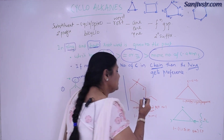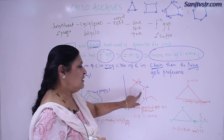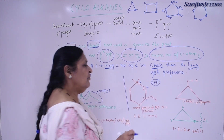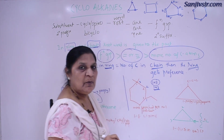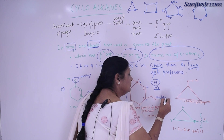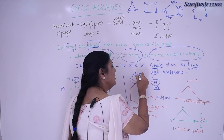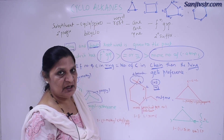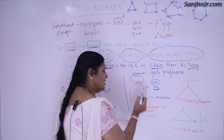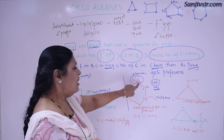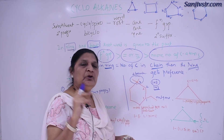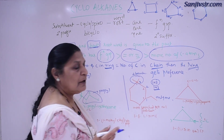If numbering starts from one side: 1, 2, 3. From the other side also: 1, 2, 3. The substitution lowest sum rule gives 1 plus 3. First point of difference is 1 plus 3 — same either way. Then we look at the side chain: here only one side chain, here two branches. In such cases, the more branched side chain — the carbon atom with more branches — gets preference and gets number 1. So this is 1, this is 2, this is 3. Therefore the name is 3-ethyl-1,1-dimethyl cyclohexane.